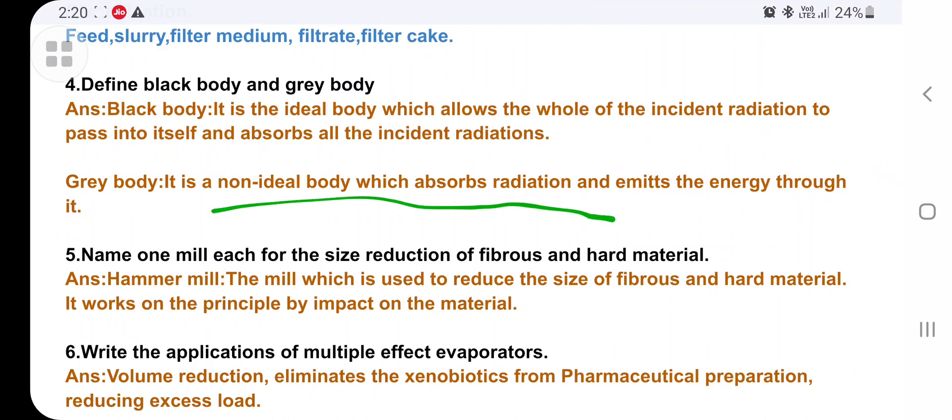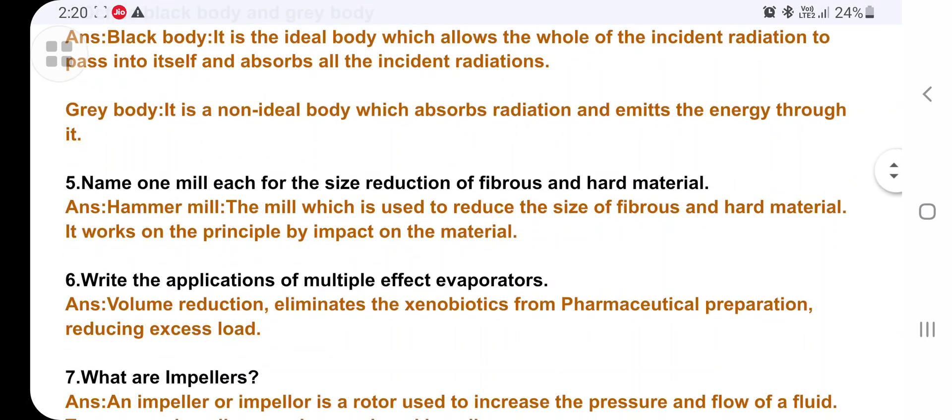Name one mill used in size reduction of fibrous and hard material. Hammer mill. The mill which is used to reduce the size of fibrous and hard material is called hammer mill and it works on the principle of impact on the material. Don't write direct definition. Some questions you have to elaborate, you have to stretch the answer.